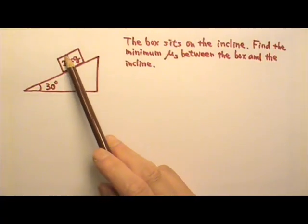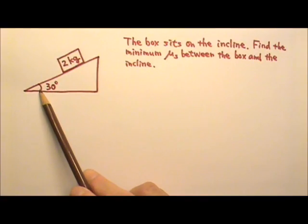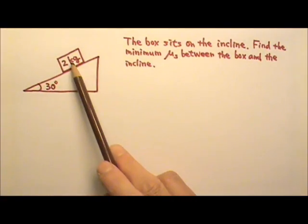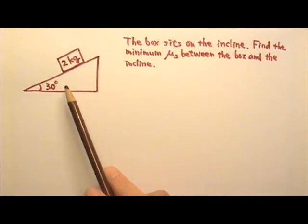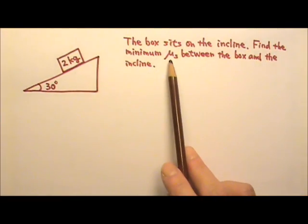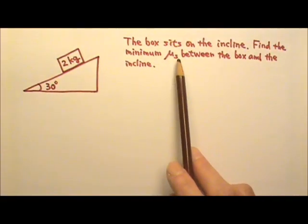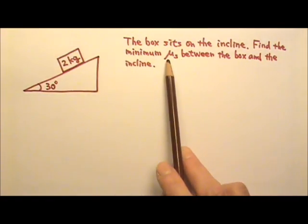We have a 2 kg box sitting on a 30-degree incline, and we want to find the minimum μs between the box and the incline. Since the box is not sliding down, there must be enough friction. If μs is too small, then the box would slide. Therefore μs has to be at least a certain amount, and we are to find that minimum μs.